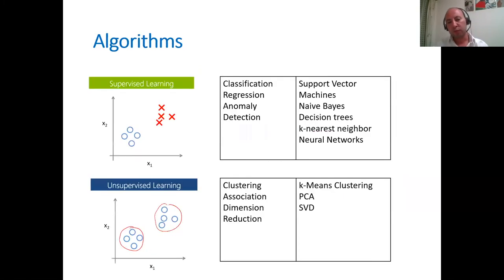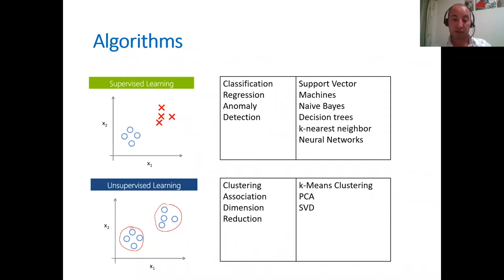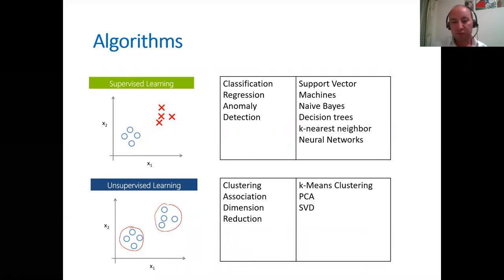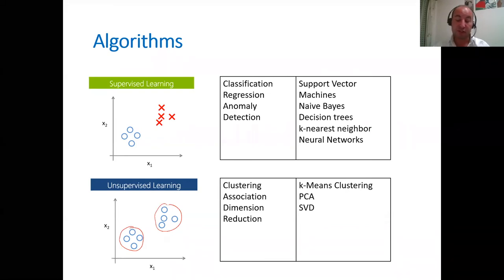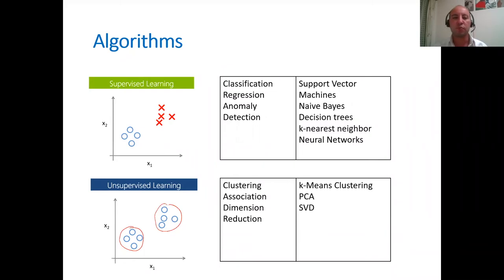Depending on our problem, we can apply different algorithms. If our problem is a supervised learning problem — meaning the data is already classified, categorized, or labeled — then we adopt supervised learning algorithms. Otherwise, if our problem is an unsupervised learning problem, where we have data that is not labeled or categorized at all, and we intend to construct different clusters or groups, then it is an unsupervised learning problem. I will give some examples at the end of this slide to these supervised and unsupervised learning problems, and we can use whichever algorithm performs best.